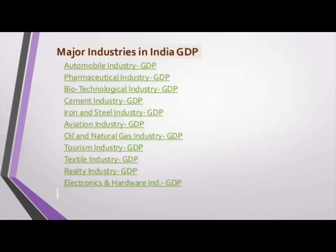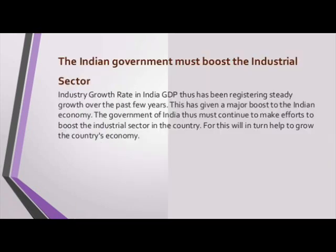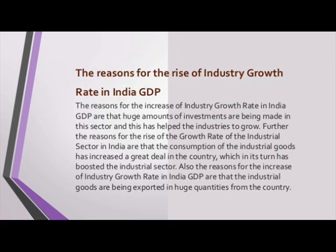Indian industrial sector — major industries in India include: 1. Automobile industry, 2. Pharmaceutical industry, 3. Biotechnological industry, 4. Cement industry, 5. Iron and steel industry, 6. Aviation industry, 7. Oil and natural gas industry, 8. Tourism industry, 9. Textile industry, 10. Realty industry, 11. Electronics and hardware industry. The Indian economy is the 12th biggest in the world. India's GDP has been registering steady growth over the past few years, giving a major boost to the Indian economy. The government of India must continue to make efforts to boost the industrial sector, which will in turn help grow the country's economy.